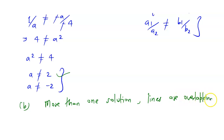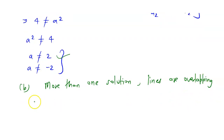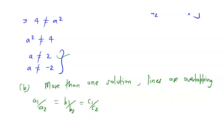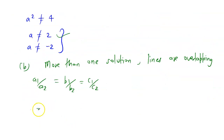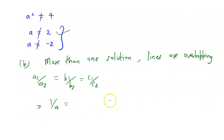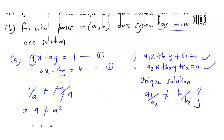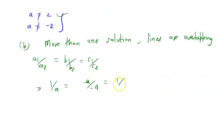More than one solution means the solution may be infinite. So the condition is: a1 divided by a2 equals b1 divided by b2 equals c1 divided by c2. Applying our coefficients: 1 divided by a equals minus a divided by minus 4, which must also equal c1 divided by c2, which is 1 divided by b.